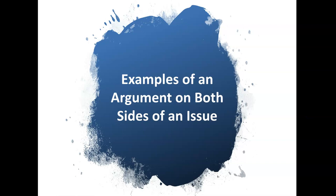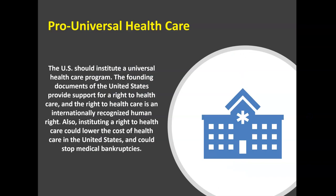Let's take a look at a simple argument on both sides of an issue — a pro and a con — so you can hear what an argument sounds like. Here's an argument in favor of universal health care: The U.S. should institute a universal health care program. The founding documents of the United States provide support for a right to health care, and the right to health care is an internationally recognized human right. Also, instituting a right to health care could lower costs and stop medical bankruptcies. The first statement — the U.S. should institute a universal health care program — is the conclusion, and the remaining statements are the premises.